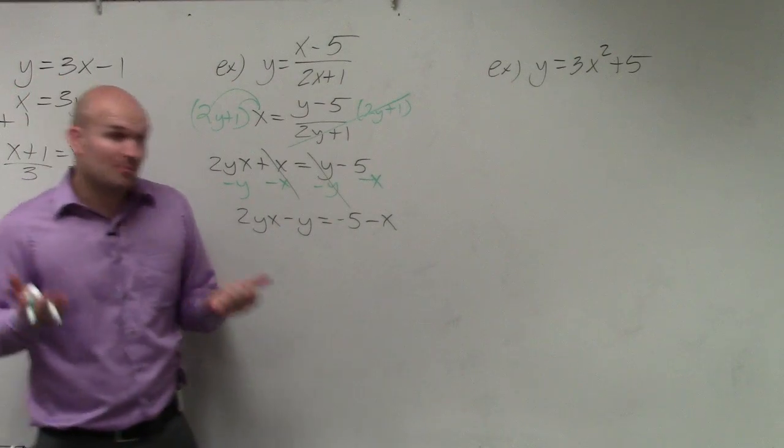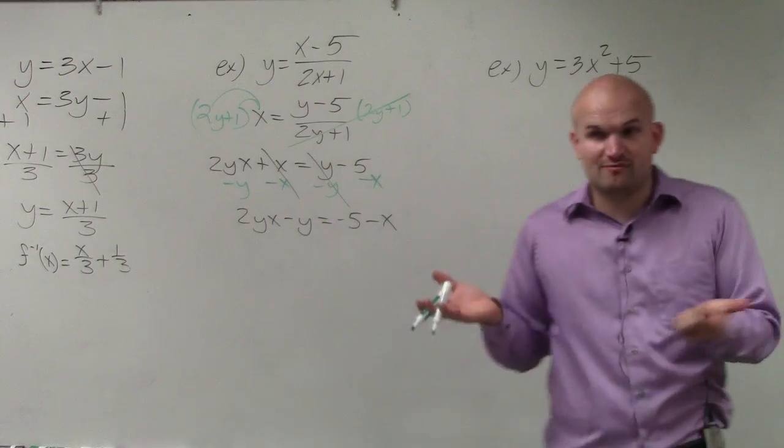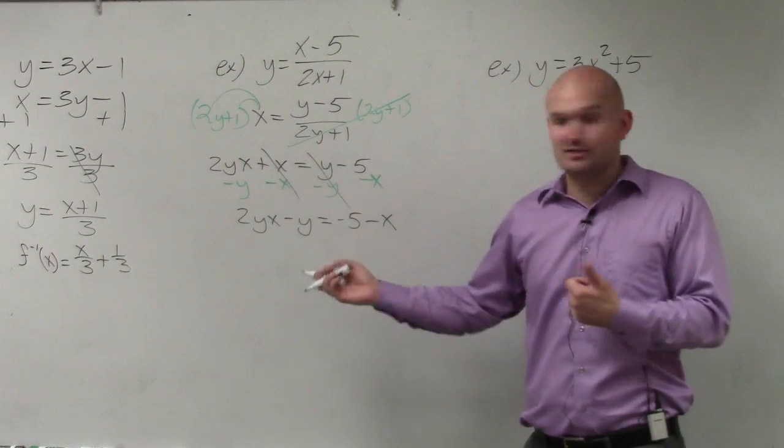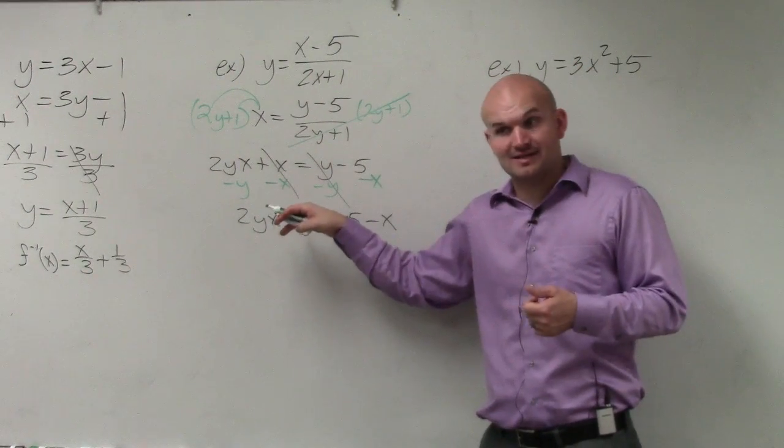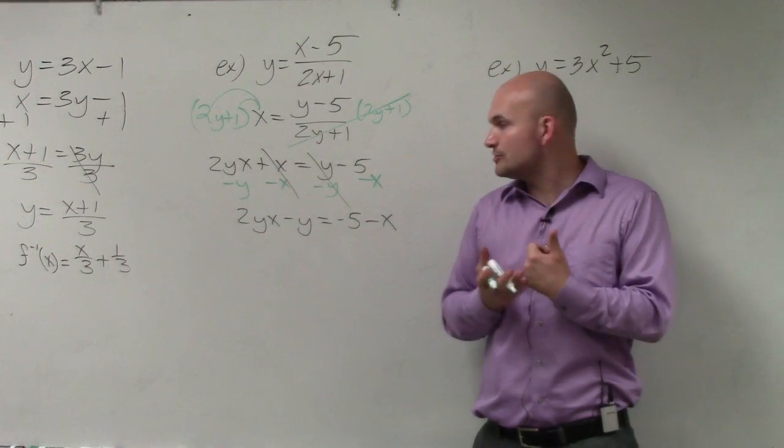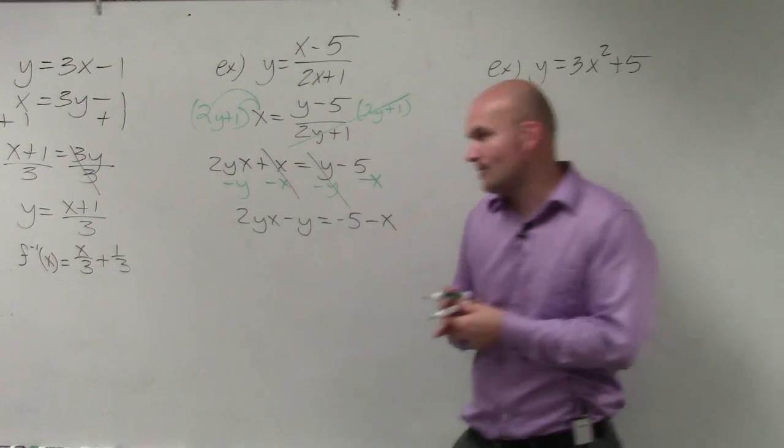Does everybody agree with me? So our problem is we have y that we need to solve for, but we have two of them. I can't combine them because they're not like terms. This has an x and this does not have an x. So the only other way for me to be able to combine them to 1y is to factor out the y.